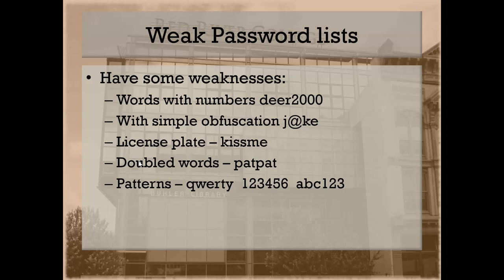Sometimes people think they are clever. They will marry words and numbers together, like 'dear2000'. They will simply substitute one character for a special character — like 'joke' substituted with the '@' symbol. Hackers know this. You will use dictionaries that take advantage of this. People will also do things called license plates — six characters that look like a license plate, thinking nobody will ever think of that. Of course they do. People will type an easy word twice; if my name is Pat, I'll type 'PatPat'. Nobody would ever think of that — of course, hackers do.